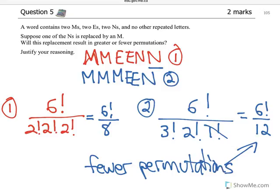I didn't even use the calculator here, but you could. This should also make sense. Once you have more repetitions, so three M's, you're going to have less unique permutations. And that's what permutations are all about, is where order actually matters. Hopefully this is helpful. Let us know if you have questions.